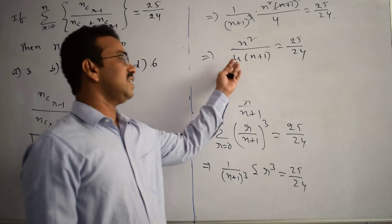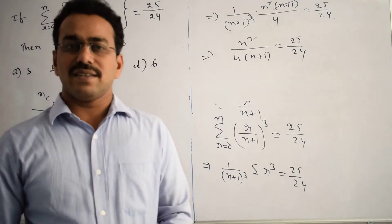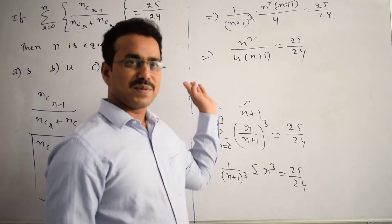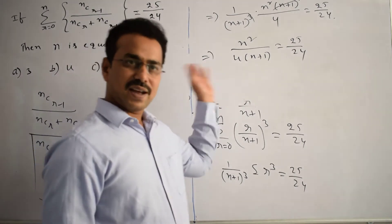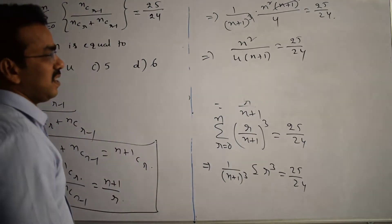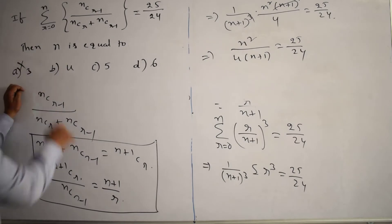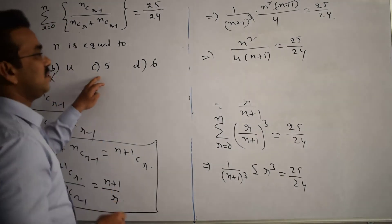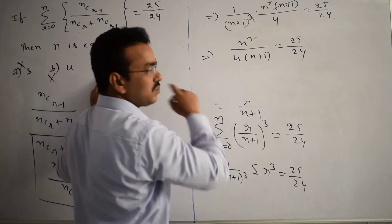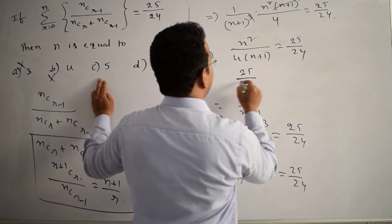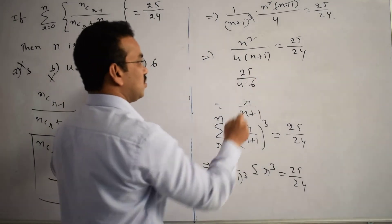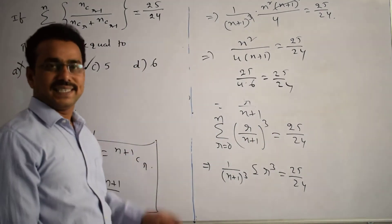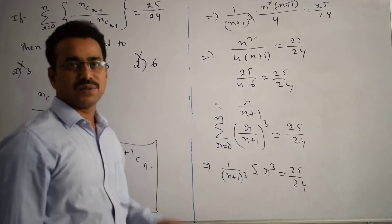This is the final equation in terms of N. We can solve it by substituting the given options. If N equals 3, we get 9 by 16 — incorrect. N equals 4 also doesn't give 25 — incorrect. If N equals 5, we get 25 divided by (4 times 6) equals 25 by 24 — correct! N equals 6 is also incorrect. So the final answer is N equals 5.